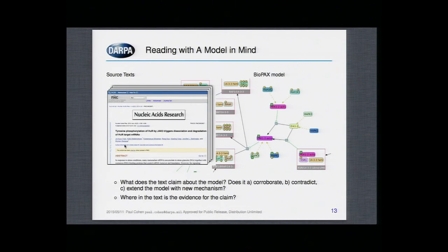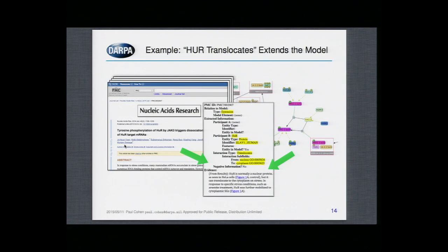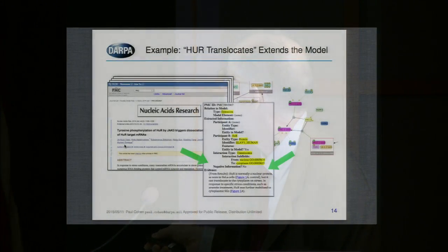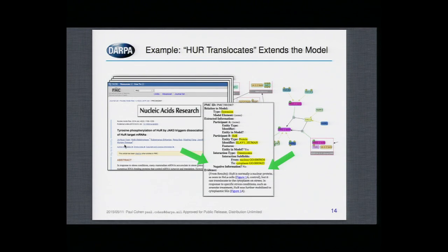For example, this is a paper from Nucleic Acids Research that claims something that wasn't in the prior model — it claims an extension. Namely, that the protein HUR translocates from the nucleus to the cytoplasm. This index card — we call them index cards — was constructed by hand by scientists at MITRE Corporation as a gold standard for an evaluation this summer. Machines will work with a model that has about 20,000 entities and will read about 1,000 papers, constructing index cards like this by reading against the model.